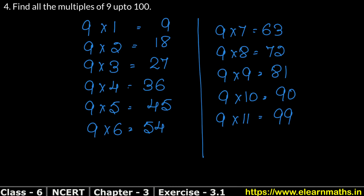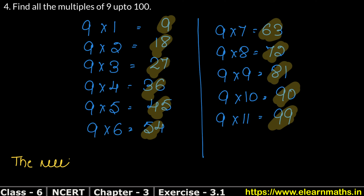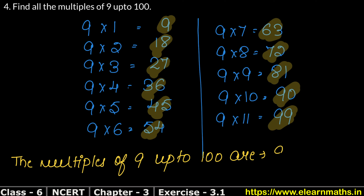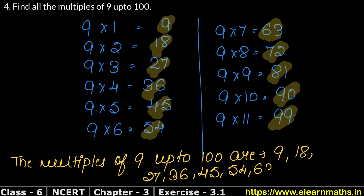So all the multiples of 9 up to 100 are: 9, 18, 27, 36, 45, 54, 63, 72, 81, 90, and 99. These are the multiples of 9 up to 100.